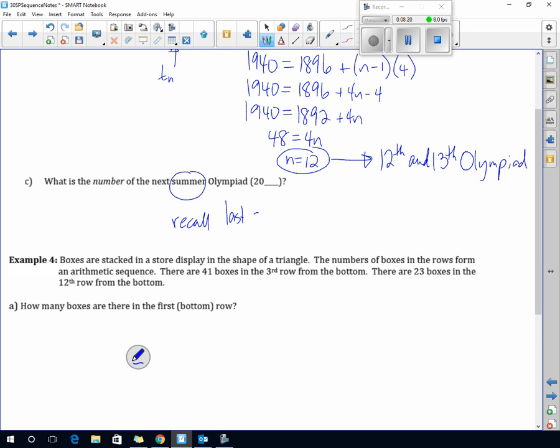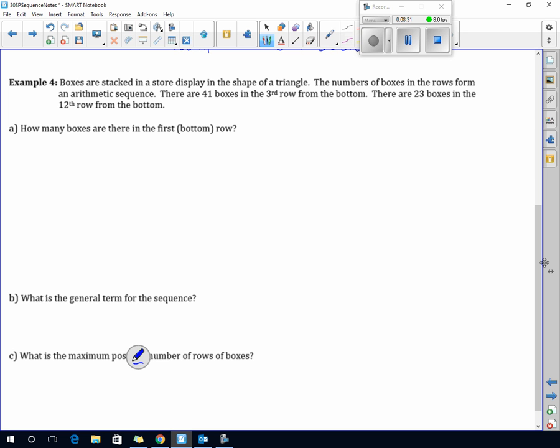Boxes are stacked in a store display in the shape of a triangle. The number of boxes in the rows form an arithmetic sequence. There's 41 boxes in the third row from the bottom, so they're giving you T3 is 41, and there's 23 boxes in the 12th row. Can you picture that? You go to the superstore or Safeway, they make this display. They start with more boxes and they're getting less and less as you go up.